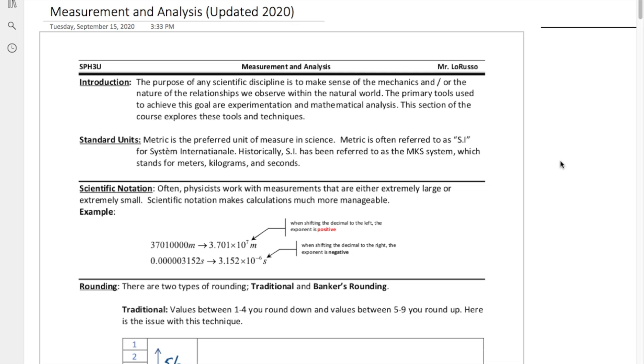The purpose of any scientific discipline is to make sense of the mechanics and the nature of the relationships we observe within the natural world. The primary tools we use to achieve this goal are experimentation and mathematical analysis. This section of the course explores these tools and techniques.